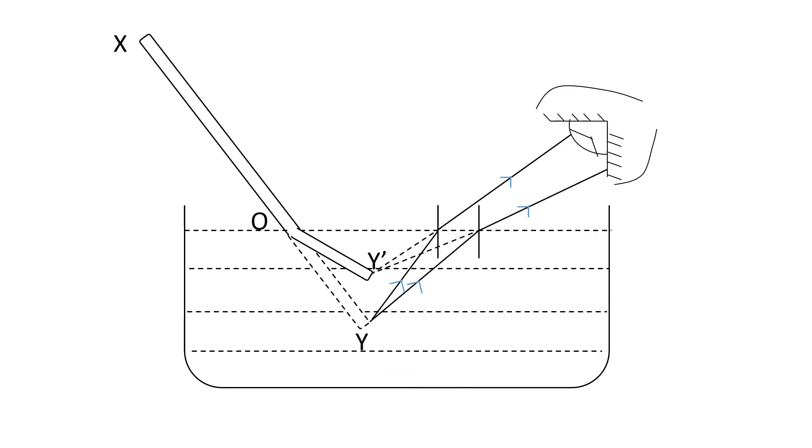These two rays appear to be coming from another point, Y dash, and that's why Y appears at Y dash.